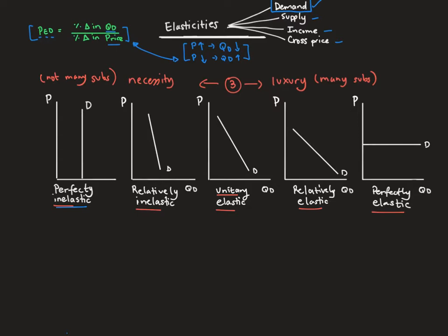In a perfectly inelastic situation, we have something like insulin. In a relatively inelastic case, we have something like petrol. These are two products that don't have many substitutes available. The demand curves are very steep in these first two cases. In the relatively elastic case, we have a product like Doritos, and in the perfectly elastic case, we have something like an orange.